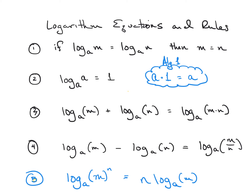Number four states that if you have logarithms of the same base being subtracted, you get to divide them — the inverse of the exponential rule where dividing like bases lets you subtract exponents. Subtracting like bases gets you to divide what you're taking the logarithms of. The first one is always the numerator and the second one is the denominator, so the subtracted term is the divisor.